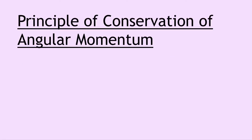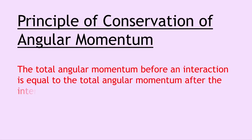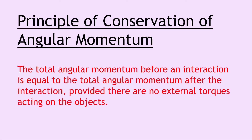Lastly we have the principle of conservation of angular momentum, also known as the law of conservation of angular momentum. This says that the total angular momentum before an interaction is equal to the total angular momentum after the interaction, provided there are no external torques acting on the objects. This is the angular form of the principle of conservation of linear momentum seen in the higher physics course — instead of linear momentum we use angular momentum, and instead of no external forces we talk about no external torques.